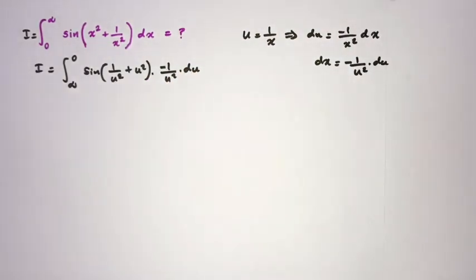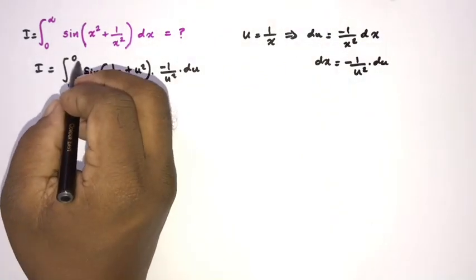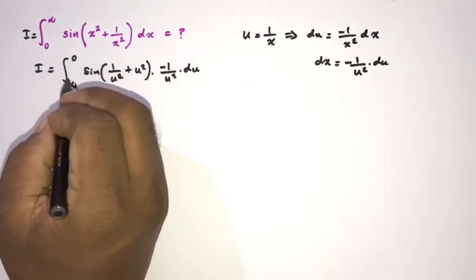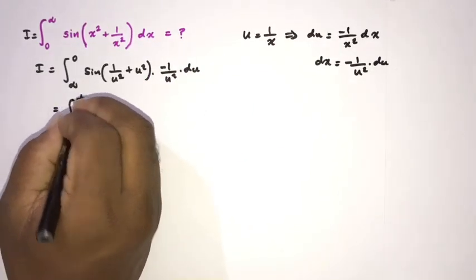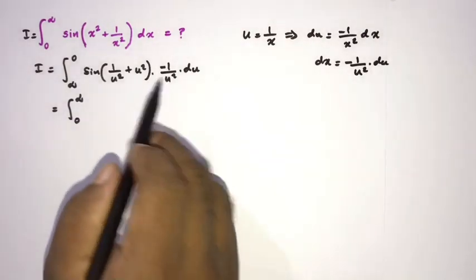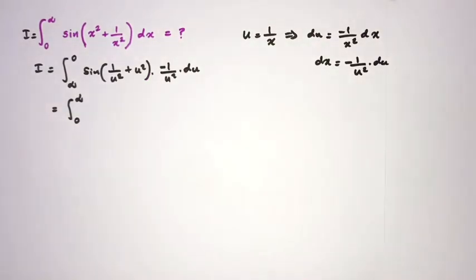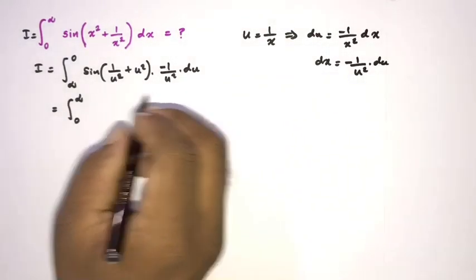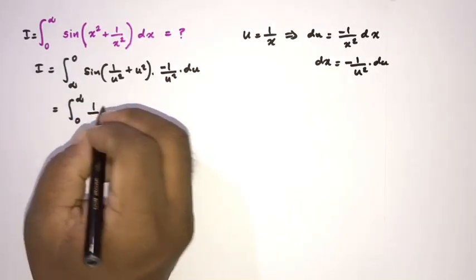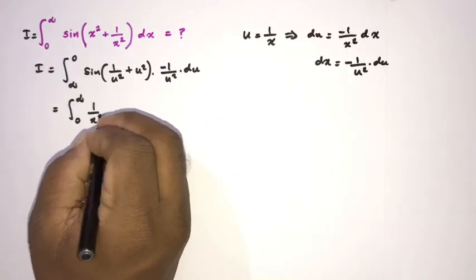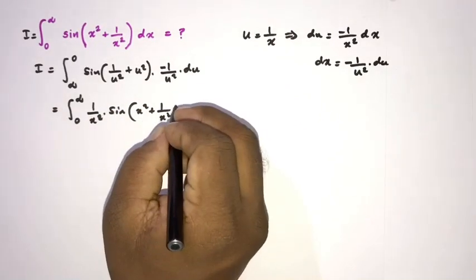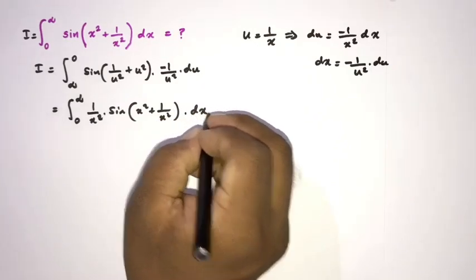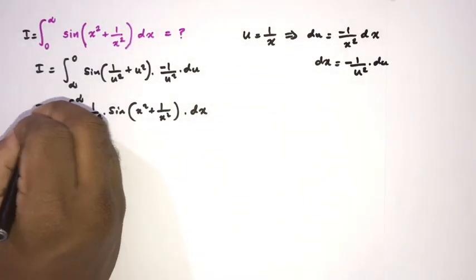Swapping the limits cancels the minus sign, so we can write the integral from 0 to infinity. Since the definite integral is independent of the variable name, we replace u with x, giving us x² · sine of (x² + 1/x²) · (1/x²) dx, which also equals I.